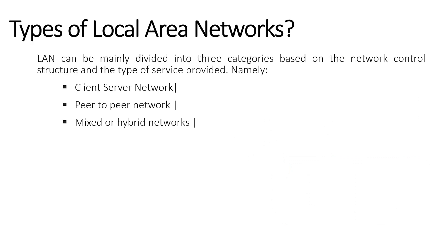LANs can be mainly divided into three categories based on network control structure and type of service provided: Client-Server Network, Peer-to-Peer Network, and Mixed or Hybrid Networks. A Client-Server Network consists of multiple dedicated servers. A dedicated server provides essential services to client PCs, including files, print messages, databases, applications, etc.